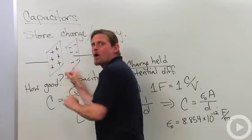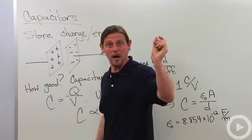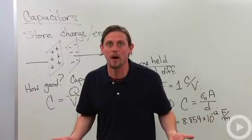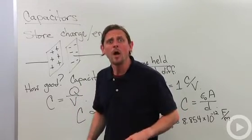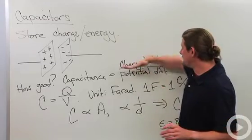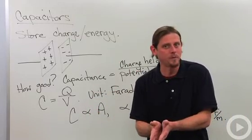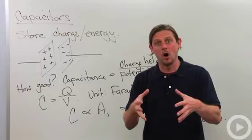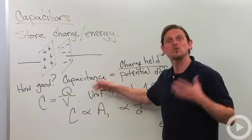The more charge that I store here, the more of a potential difference there'll be across the plates. If I were to take another positive charge, it would rather be on the negative plate than on the positive plate, because positive charges don't like other positive charges. So the more charge I store, the bigger the potential difference will be. We're going to define the capacitance as the amount of charge stored divided by the potential difference. If I'm able to store a lot of charge without a huge potential difference, I get a very large capacitance. If even storing a little bit of charge requires a huge potential difference, I'll have a really small capacitance.